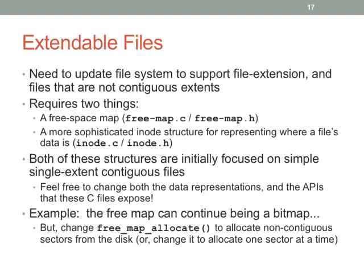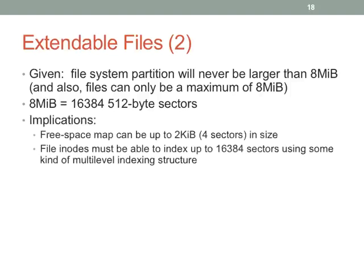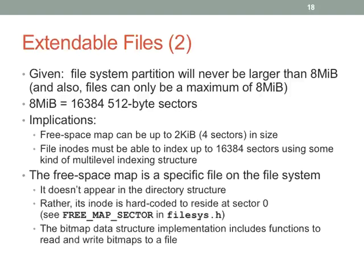The file system partition will never be larger than 8 megabytes — that's 16k sectors given our sector size. The implications are that your free space map might be up to 4 sectors in size. File inodes have to somehow index up to 16k sectors using some kind of multi-level indexing structure. They suggest ext2, but it's really too much for a single level indexing structure — a single sector of inode data can only store 128 entries, so you need multiple levels.